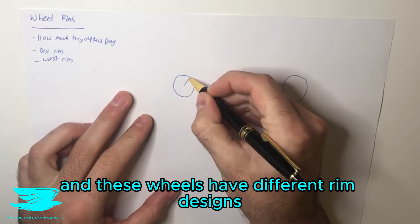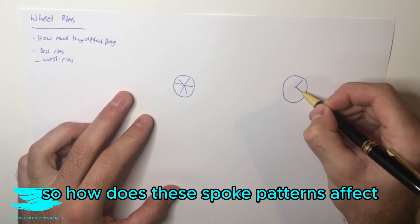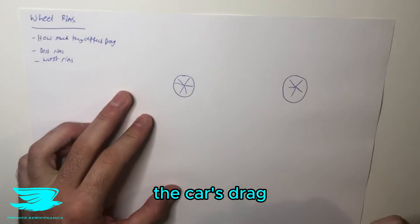And these wheels have different rim designs, so you can have different spoke patterns. So how do these spoke patterns affect the car's drag?